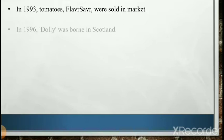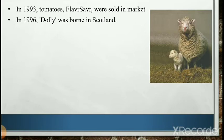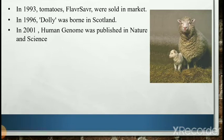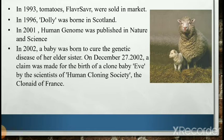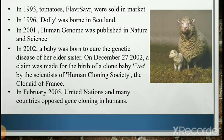Another hormone, somatotropin, was produced on an industrial scale in 1993. The first genetically engineered tomato, Flavr Savr, was sold in the market in 1996. The first cloned lamb, Dolly, was born successfully by scientists of Scotland in 2001. The sequence of the human genome was published in Nature and Science; the Human Genome Project was completed by March 2003. In 2002, a designer baby was born to cure the genetic disease of her elder sister. On December 27th, 2002, a claim was made for the birth of a clone baby named Eve by the scientists of the human cloning society, the Clonaid of France.